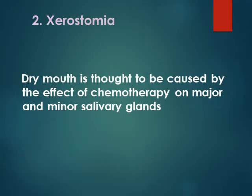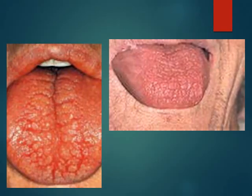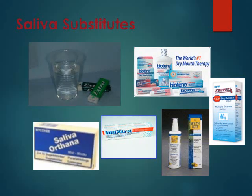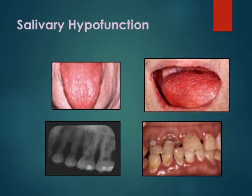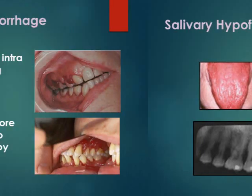Xerostomia, or dry mouth, is thought to be caused by the effect of chemotherapy on major and minor salivary glands. Patients present with very dry mouth and fissured tongue, and will use salivary substitutes. Whenever there is xerostomia, you will find caries — so patients with xerostomia will be more liable to caries and should use fluoride.